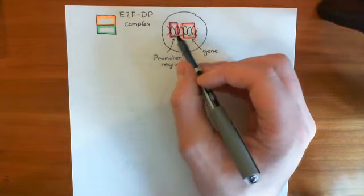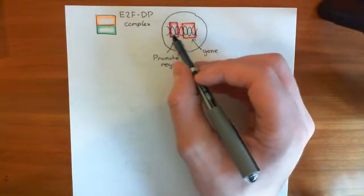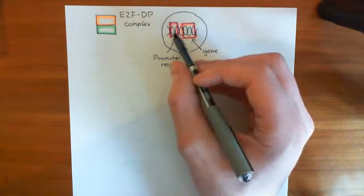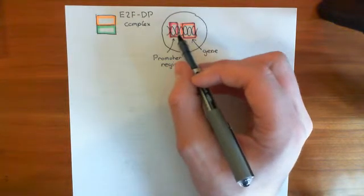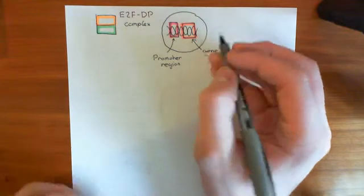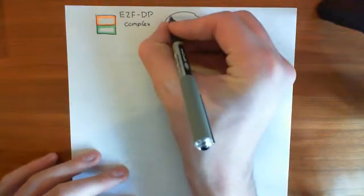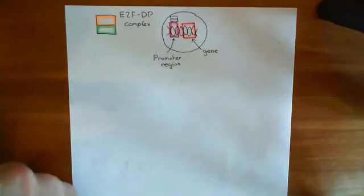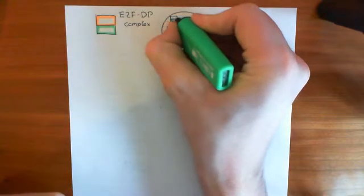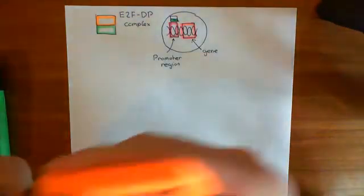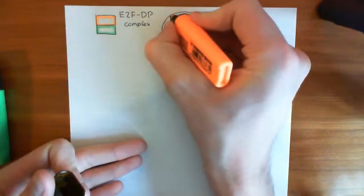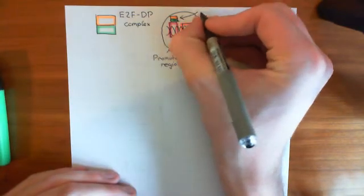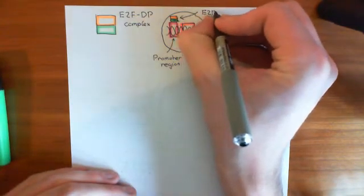So if you can do something to the promoter region that makes the RNA polymerase like to dock there more, i.e. increase the affinity of this promoter region for the RNA polymerase, then you can increase the amount of mRNA you produce and therefore increase the amount of gene product you produce.